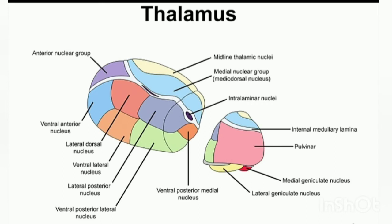Structures and nuclei of the thalamus. Regarding white matter: the external medullary lamina covers the lateral surface, and the internal medullary lamina divides the thalamus into three parts — anterior, medial, and lateral.